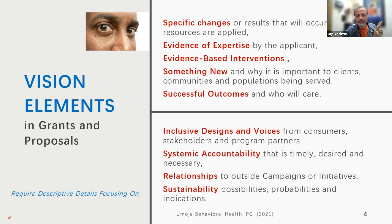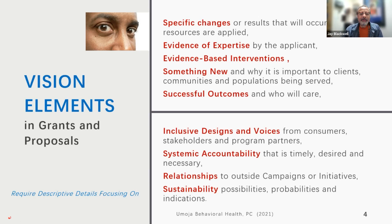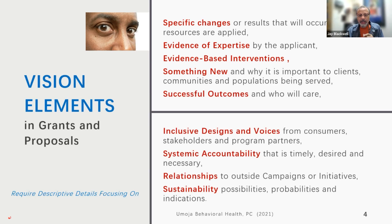The grant reviewer is checking for inclusive designs and voices — are consumers part of your ideas, have you invited them to the table, how have you included the voice of those who will benefit? Systemic accountability — do you show accountability to your clients, your staff, and the money? In any application, it takes three or four sentences to show accountability to the money. Check out the term GAAP — it's an acronym. Ask your accountant or CFO how GAAP can be represented within your applications.